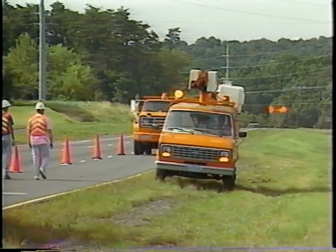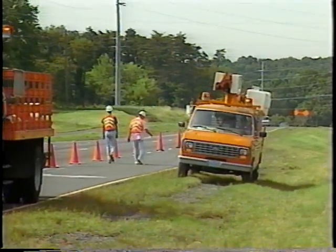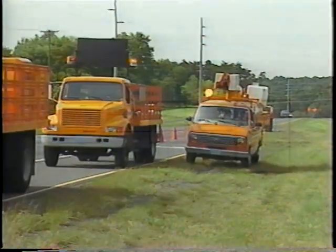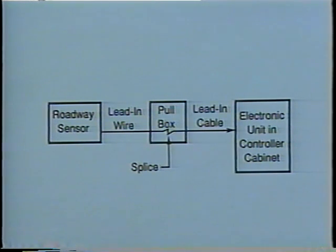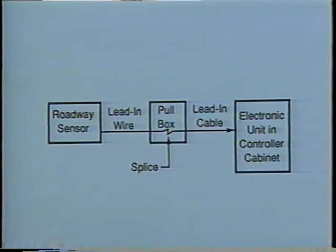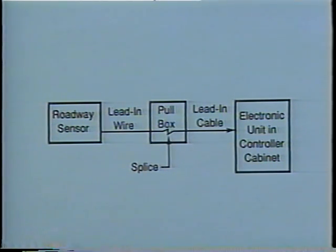This completes the pre-installation process. The loop detector system is composed of one or more wire loops embedded in the pavement to act as a sensor, a splice between the lead-in wire and the lead-in cable in the pull box, the lead-in cable—usually in a conduit—running to the terminal strip in the controller cabinet, a cable from the terminal strip to the electronic detector unit, and finally the electronic detector unit itself.